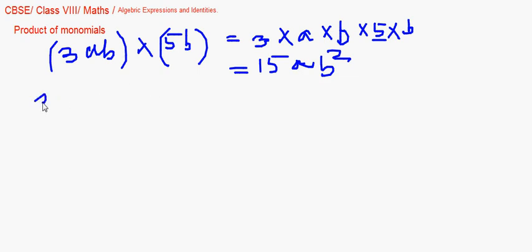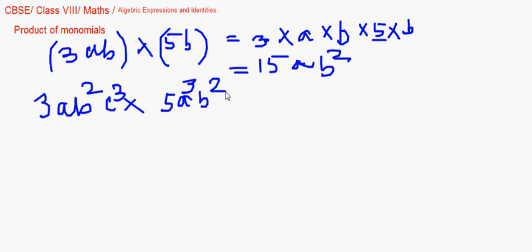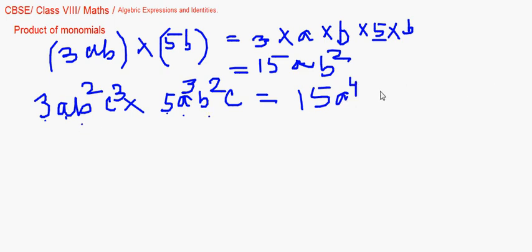Suppose it is 3ab²c³ multiplied by 5a³b²c. They are both monomials. So 3 into 5 gives 15. Then the like variables: a × a³ gives a⁴; b² × b² gives b⁴; and c³ × c gives c⁴. So the answer is 15a⁴b⁴c⁴.